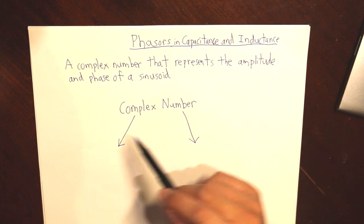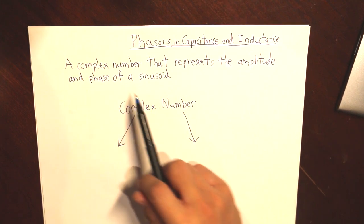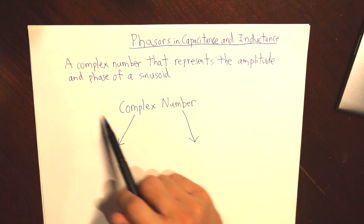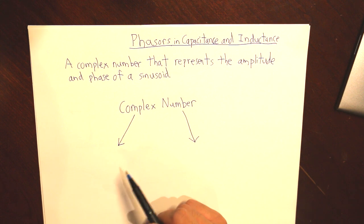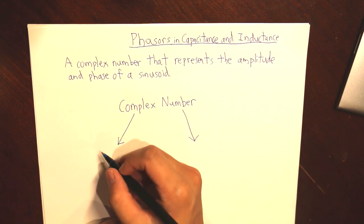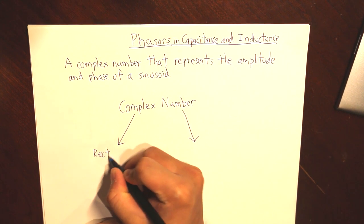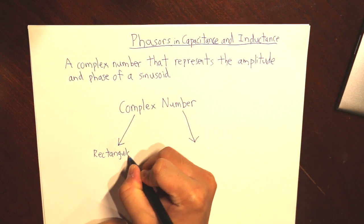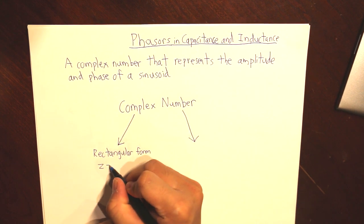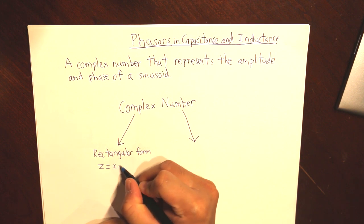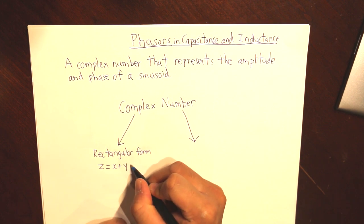So to recap, phasor is a complex number that represents the amplitude and phase of a sinusoid. Now the complex number can be put into two different forms. The first is the rectangular form, denoted as Z equals X plus YJ.